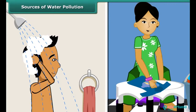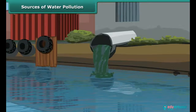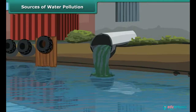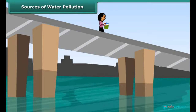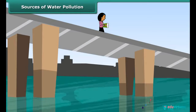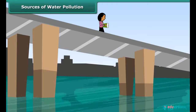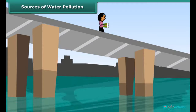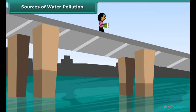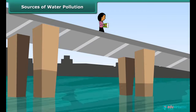People bathe, wash clothes and defecate in rivers and ponds. They also throw garbage, flowers and non-biodegradable polythene bags into the river. Many rivers have become dead due to high levels of pollution, and aquatic life cannot survive in them.